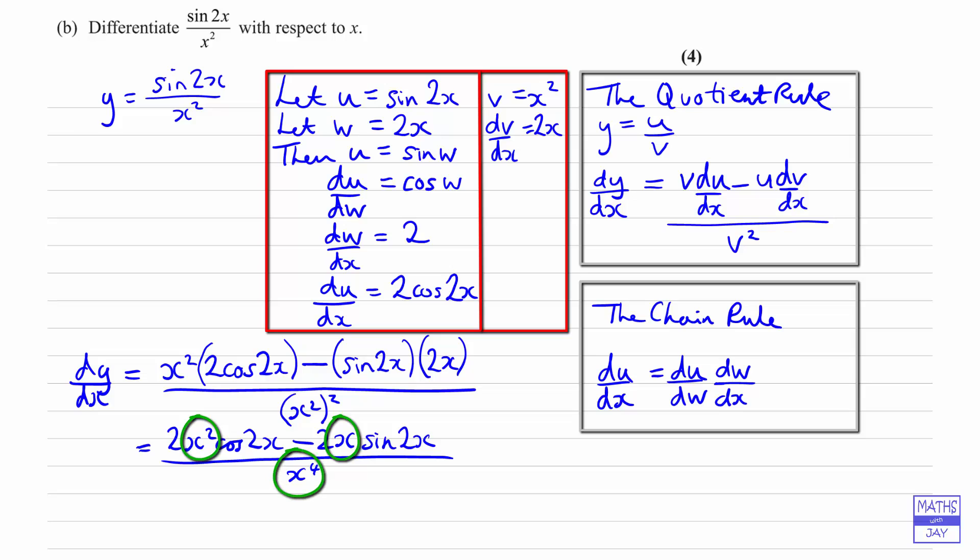So what we can do is take a 2 outside a bracket and also divide each term by x. Looking at the denominator so we don't forget that, let's just put that outside here. So dividing x to the fourth by x gives us x cubed.